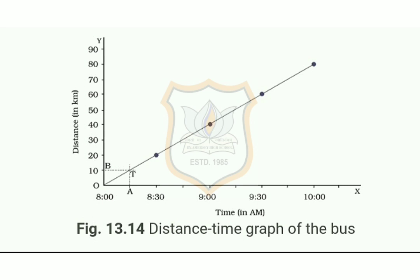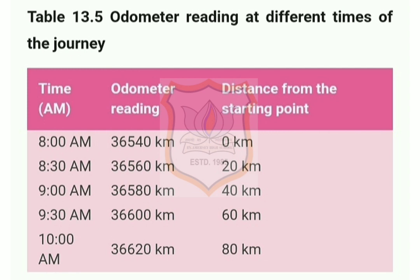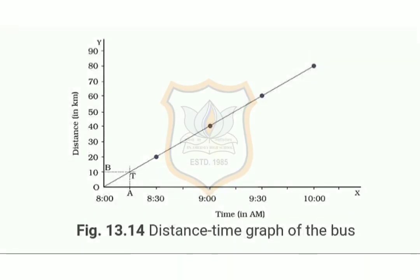Distance-time graphs provide a variety of information about motion compared to data presented in a table. For example, table 13.5 gives information about the distance moved by the bus only at some definite time intervals. From the distance-time graph we can find the distance moved by the bus at any instant of time.